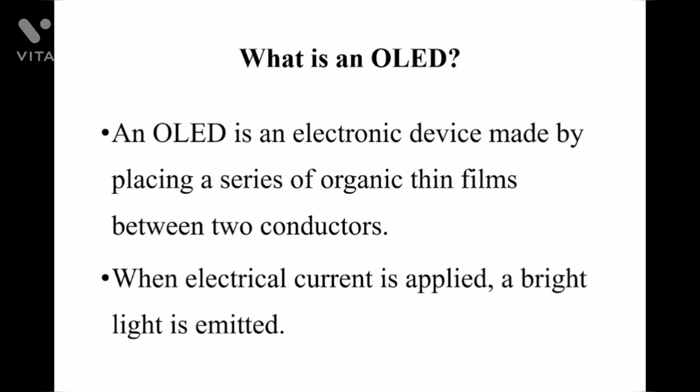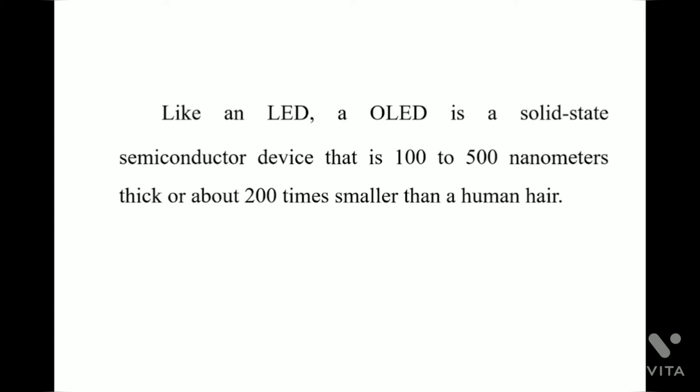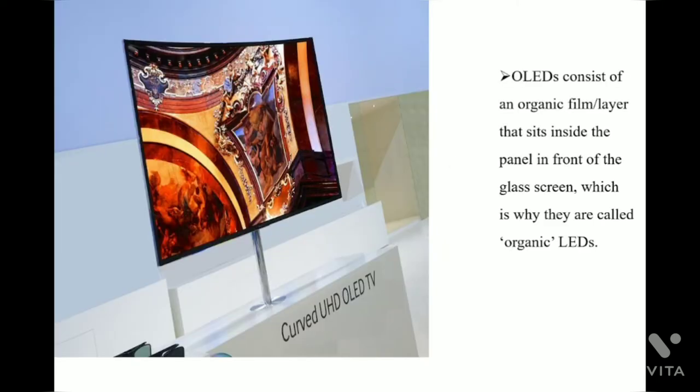An OLED is an electronic device made by placing a series of organic thin films between two conductors. When electric current is applied, a bright light is emitted. Like an LED, an OLED is a solid-state semiconductor that is 100 to 500 nanometers thick, or about 200 times smaller than a human hair. Organic Light Emitting Diodes consist of an organic film or layer that sits inside the panel in front of the glass screen, which is why they are called organic light emitting diodes.